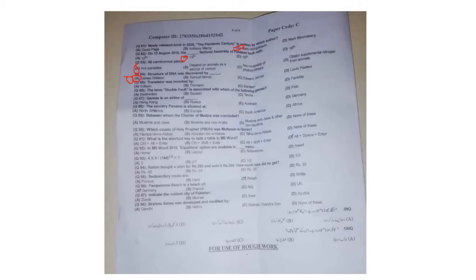Question 85: The transistor was invented by John Bardeen. Question 86: The term 'double fault' is associated with tennis. Question 87: Qantas is an airline of Australia. Question 88: Panama is located in South America. Question 89: The Charter of Medina was concluded between Muslims and Jews. Question 90: The cousin of the Holy Prophet who was a great Mufassir of the Quran is Abdullah ibn Abbas.